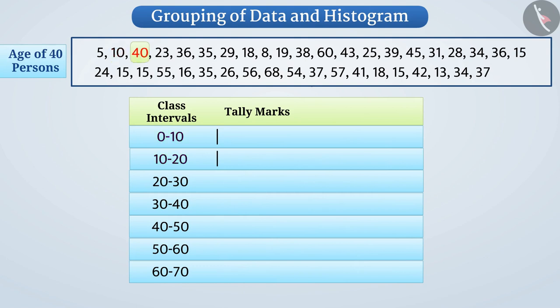So tell me in which class interval the observation 40 will be included? Think. Absolutely right! It will be included in the class interval 40 to 50 and not in 30 to 40. So we will create a tally mark in class interval 40 to 50 to represent 40. Similarly, we will present all the data in the table using tally marks.